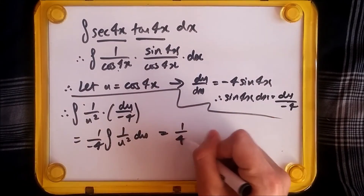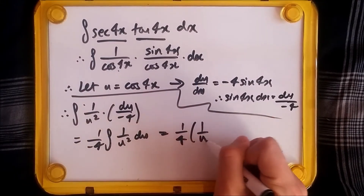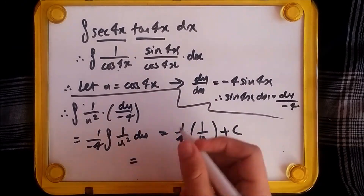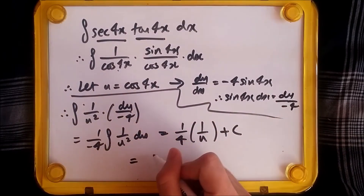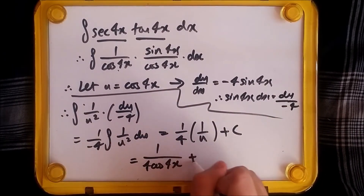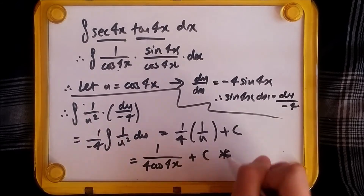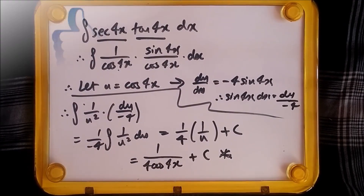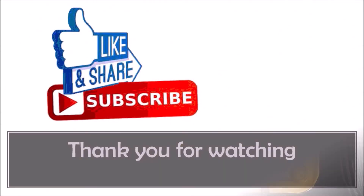Integrating 1/u² gives -1/u. Because you have -1/4 outside and -1/u from the integration, the two negatives cancel to give a positive. The rest is straightforward — don't forget to substitute u back as cos(4x), and once you do that, you're done.